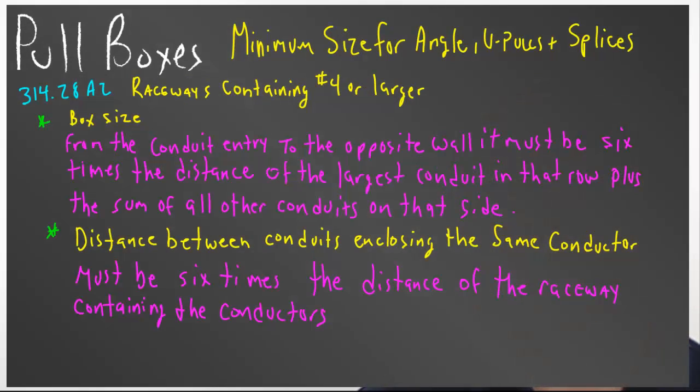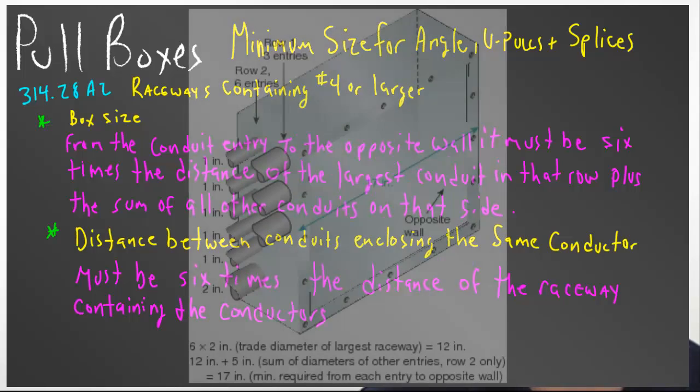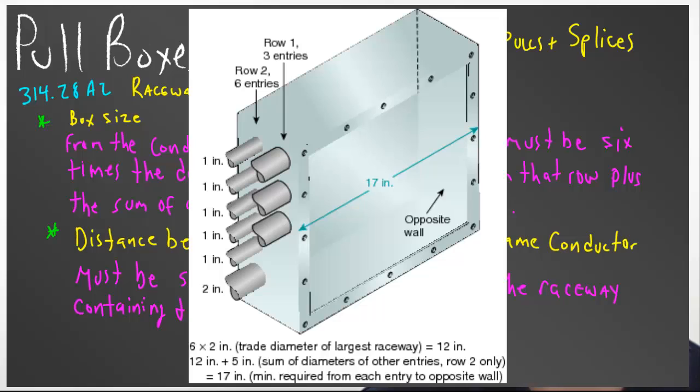When we get into angle, u-pulls, and splices the rules change a little bit. The rules are it's 6 times the largest conduit on a side to the opposite side of the box plus the addition of the conduits that are also on that side in the same row. When you look at this graphic you'll see that we have a 2-inch and 5 1-inch conduits. Well 6 times that 2-inch is 12 inches and then when you add the 5 1-inch conduits which would be 5 inches that box to the opposite side would have to be 17 inches. You don't have to count those other conduits in the second row because the conduit in the last row has more conduits in it and it would require the box to be larger. Keep that in mind.